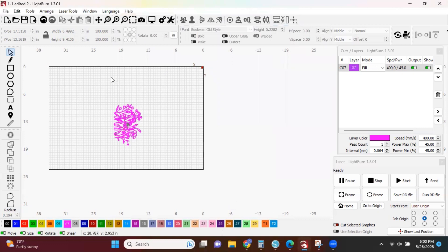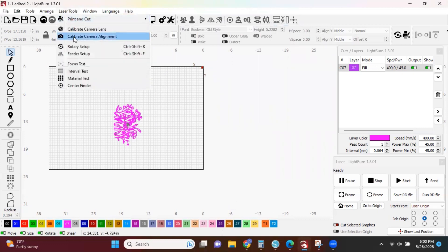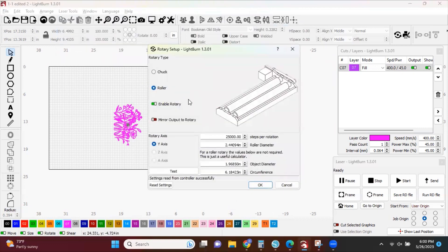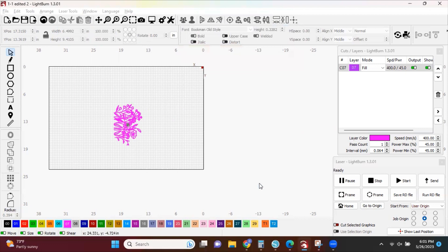To double check to make sure the rotary was enabled, click on Laser Tools and Rotary Setup. Enable Rotary should be green as well as the roller bubble checked. Click OK.